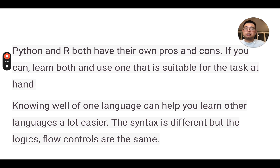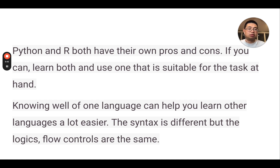So the summary is that Python and R both have their own pros and cons. If you can, learn both and use whichever is suitable for the task at hand. Knowing one language well can help you learn other languages much more easily, because although the syntaxes differ, the logic is the same — for example, flow controls like if/else conditions are very similar across languages. Another language called Julia is very popular, very fast, and similar to Python in syntax. If you know both Python and R, picking up Julia or Rust for bioinformatics probably won't be that hard.